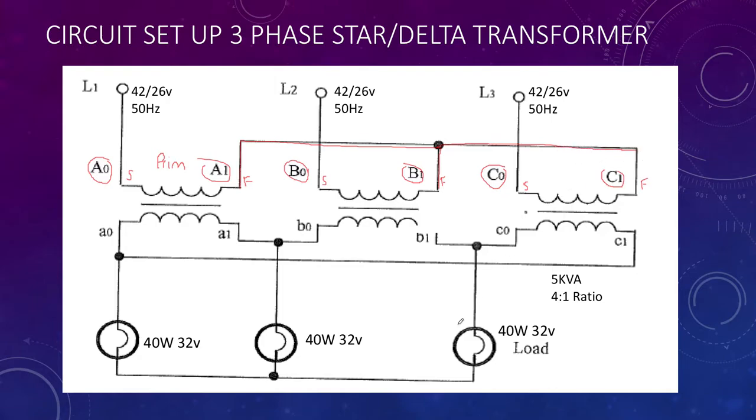Again, very important to get start to finishes correct. In this particular case, all the finishes have been connected together to create a star point. As long as the load going out the other side is balanced, you won't need to take that star point back to the neutral on your supply. Then we have our three supplies, line one onto A phase at 42 volts. So that takes care of the primary side of the transformer, and our primary is connected as a star.